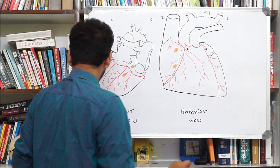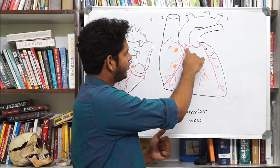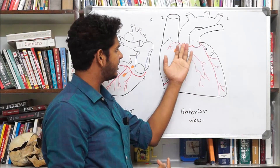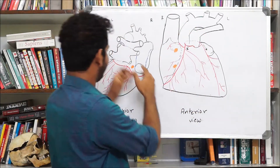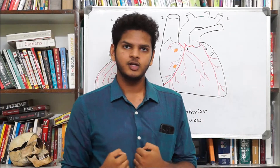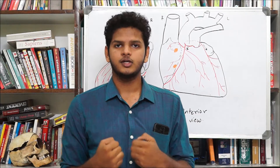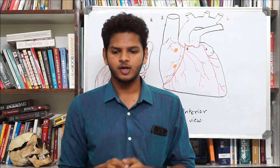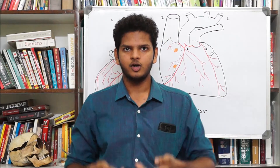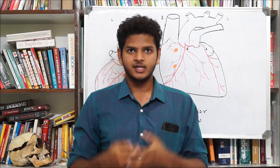We can clearly see two arteries arising from the ascending aorta, dividing and supplying the heart — these are the coronary arteries. The right coronary artery arises from the anterior aortic sinus. The aortic valve has three cusps — the posterior, right, and left cusps — and prevents backflow of blood from the aorta into the left ventricle.